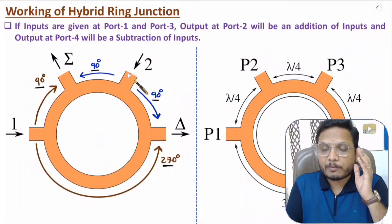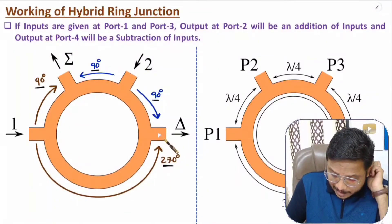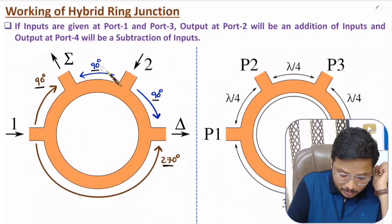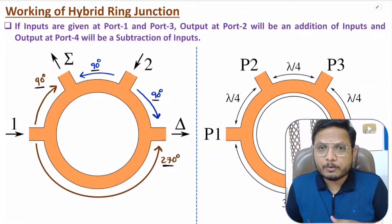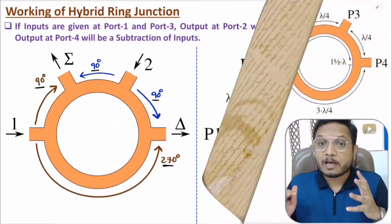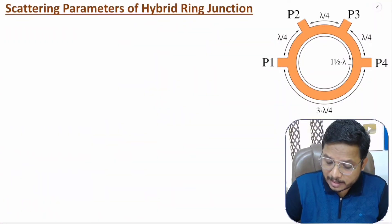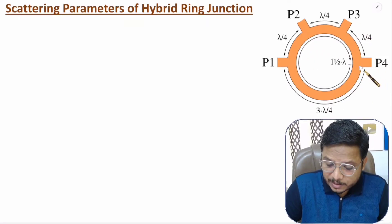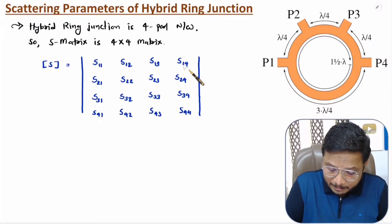So at port 4 we get subtraction of the two signals, and at port 2 we get addition of the two signals. Now I'll explain the derivation of scattering parameters for hybrid ring junction. It is a 4-port device, so the scattering matrix has size 4×4, giving 16 scattering parameters in total.